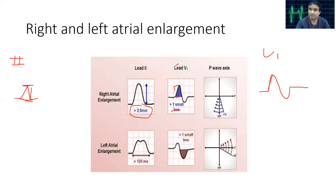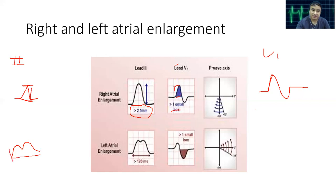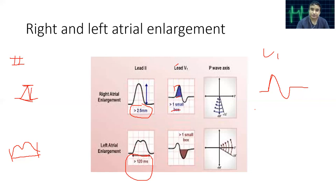In a patient with left atrial enlargement, the right atrium depolarizes first, but because the left atrium is enlarged it takes more time, so there is an increase in duration of the P wave. The normal duration of the P wave is less than 120 milliseconds. If there is left atrial enlargement, since the left atrium is enlarged it takes more time to depolarize, the P wave duration exceeds 120 milliseconds and we see a pattern known as P mitral.